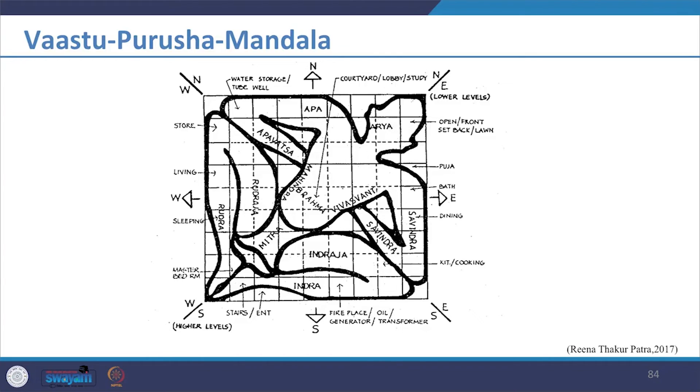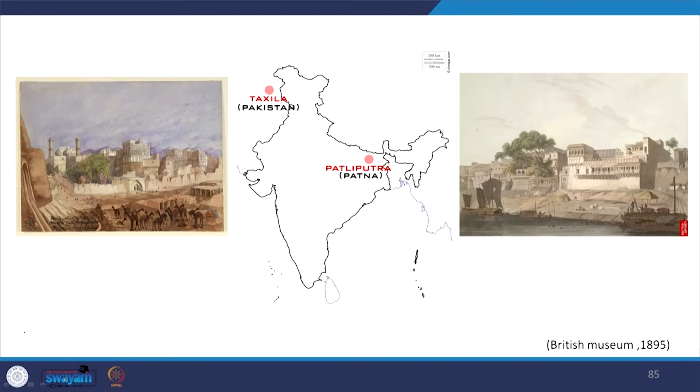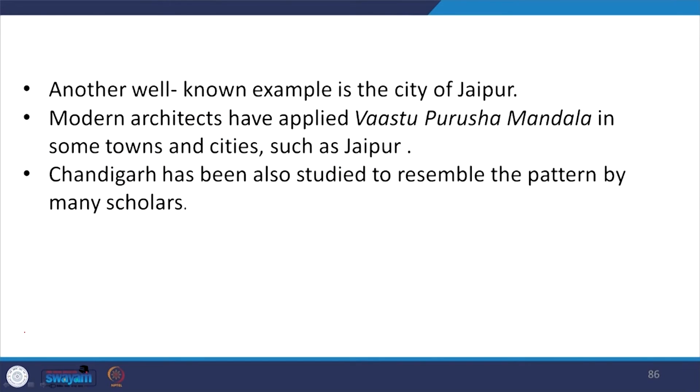Further we see that in this period the town planning process was also evolved. It gave a lot of inputs on the shape of the town as we have already seen earlier. We also see details of site planning process coming up in this period — descriptions such as what steps should be followed to determine the direction, shape, size and ground coverage. The most important example of town planning according to Vastu principle was first depicted in Arthashastra in the medieval period, known as Patliputra and Takshashila which is in present day Pakistan. Another well known example is the city of Jaipur, where modern architects have applied Vastu Purusha Mandala. Chandigarh has also been studied to resemble the pattern by many scholars.